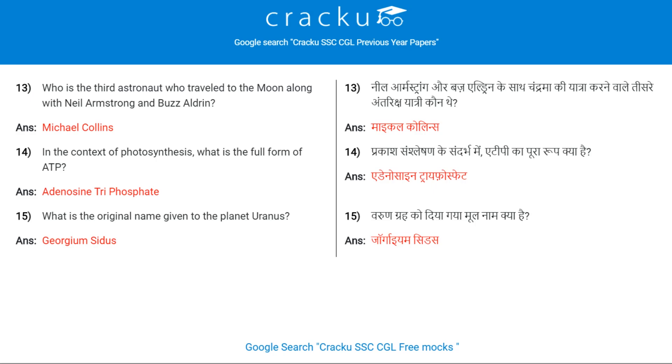What is the original name given to the planet Uranus? Georgium Sidus.